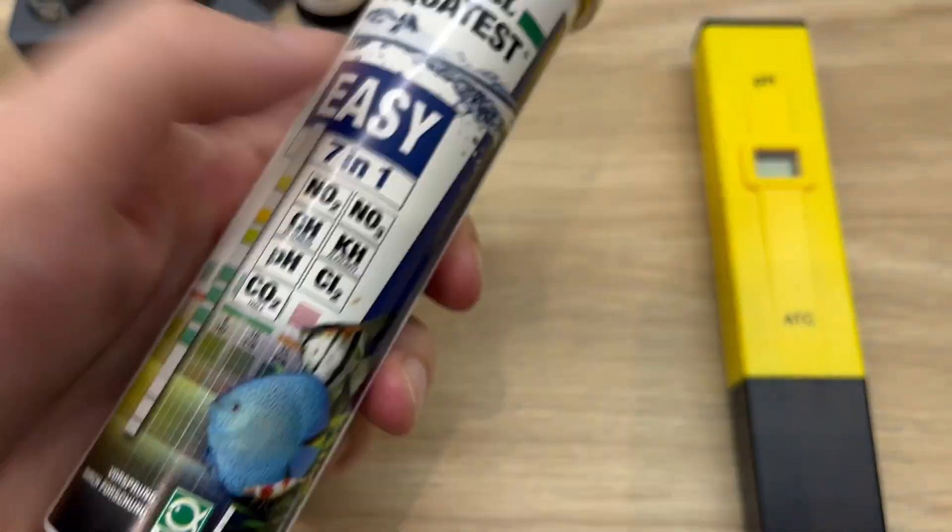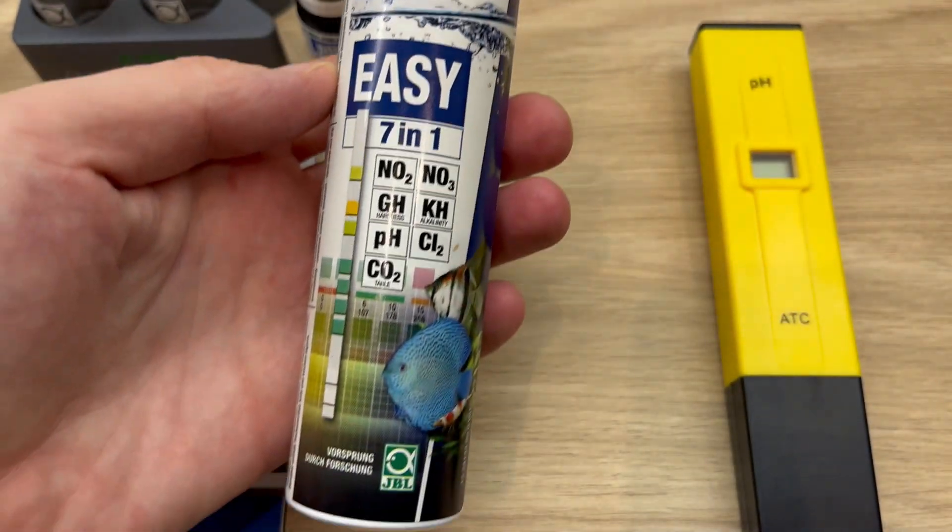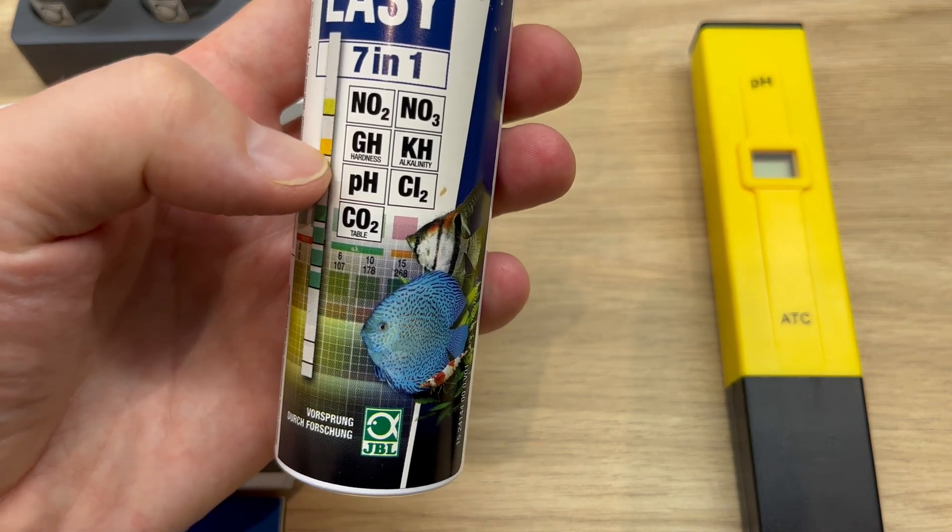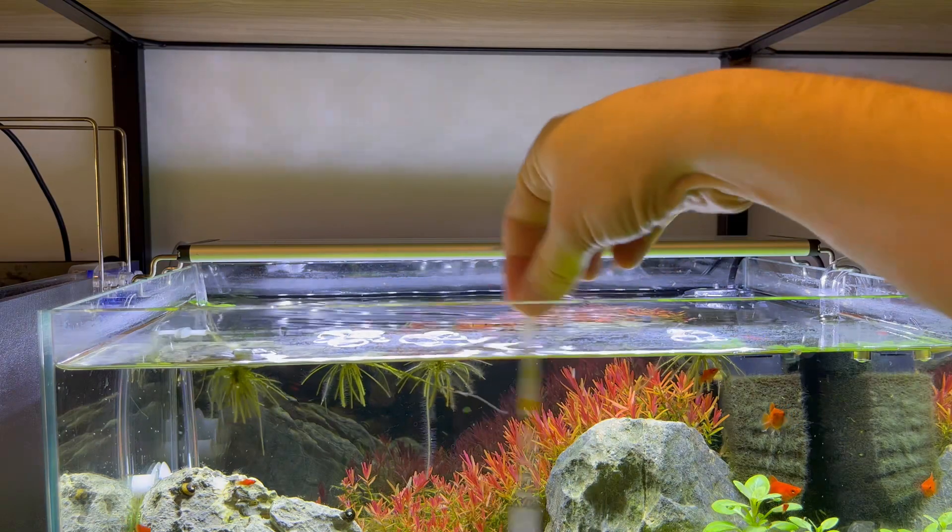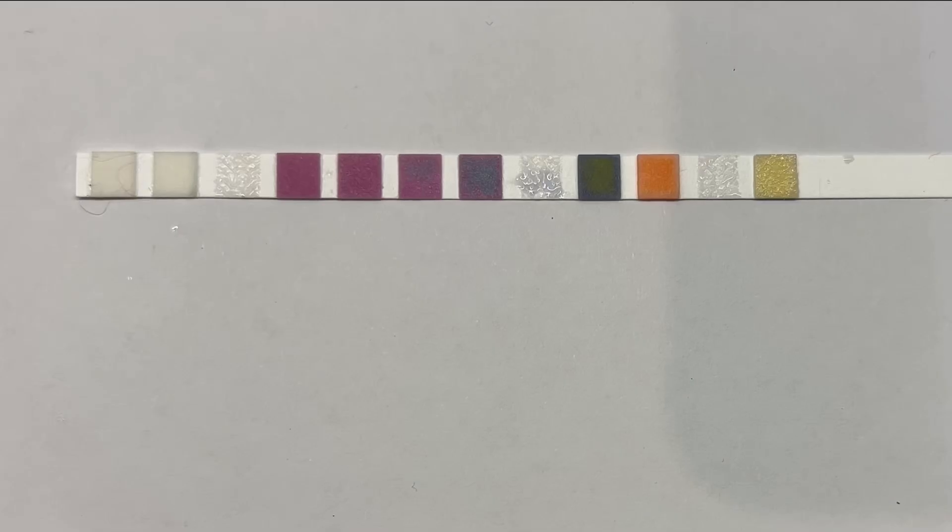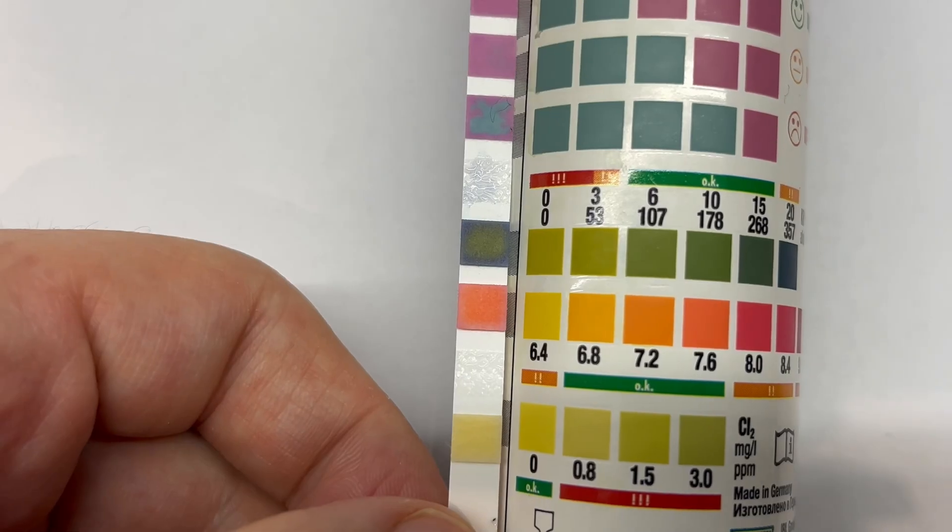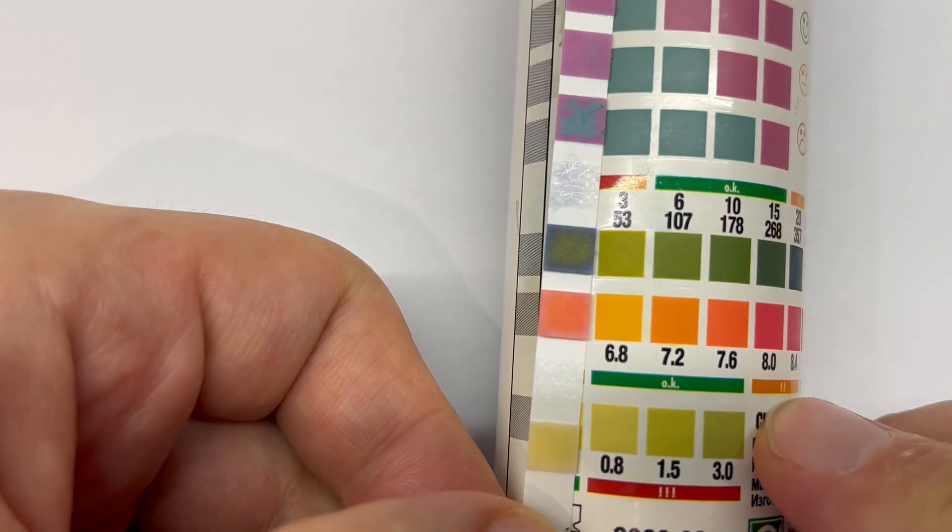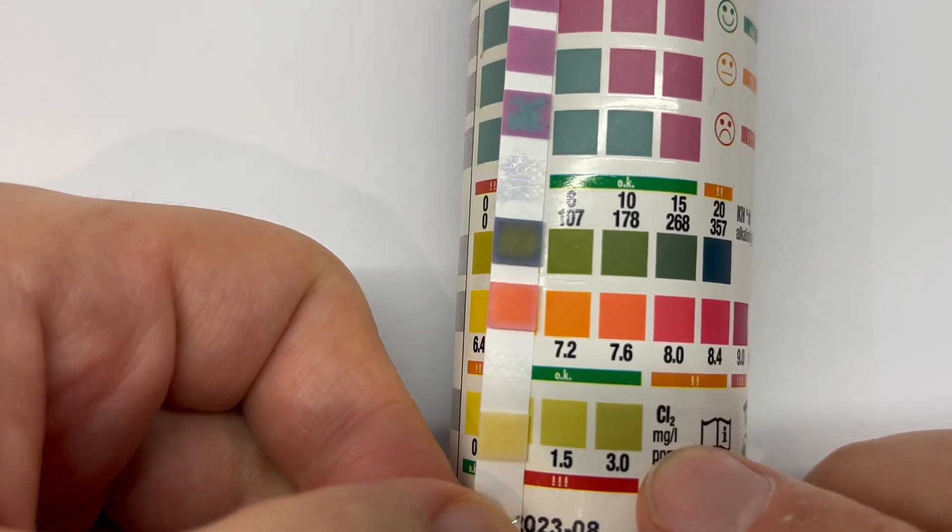Next method would be to use those kind of testing stripes. Those stripes can measure more things at the same time. So what you have to do is put the stripe for two seconds inside your tank and then you have to wait for one minute. And after one minute, you should compare the colors on the stripe with the colors on the packaging.